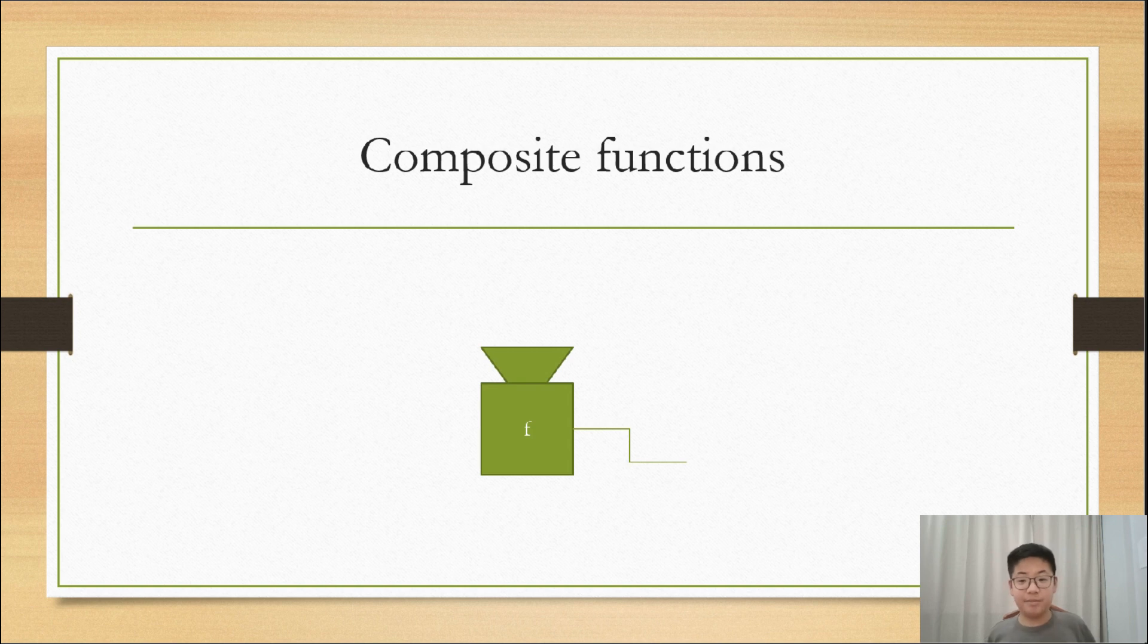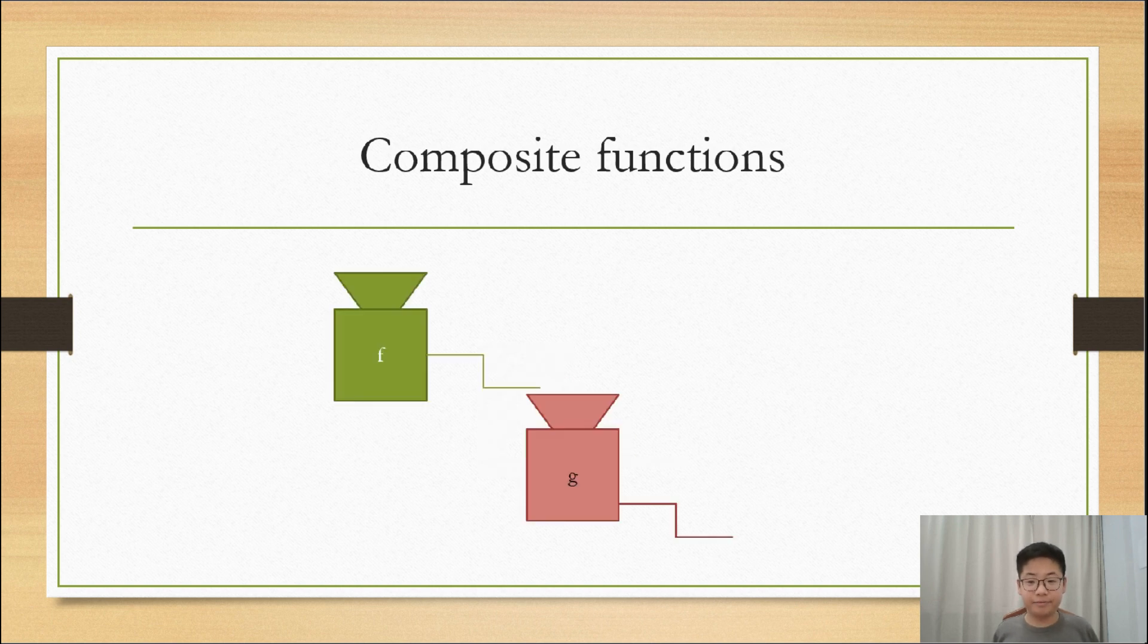Let's imagine a function as a machine, sort of like this which you can see here. It inputs a number and outputs a number. Let us call this function f. Now there is another function which works on the same principle called g.